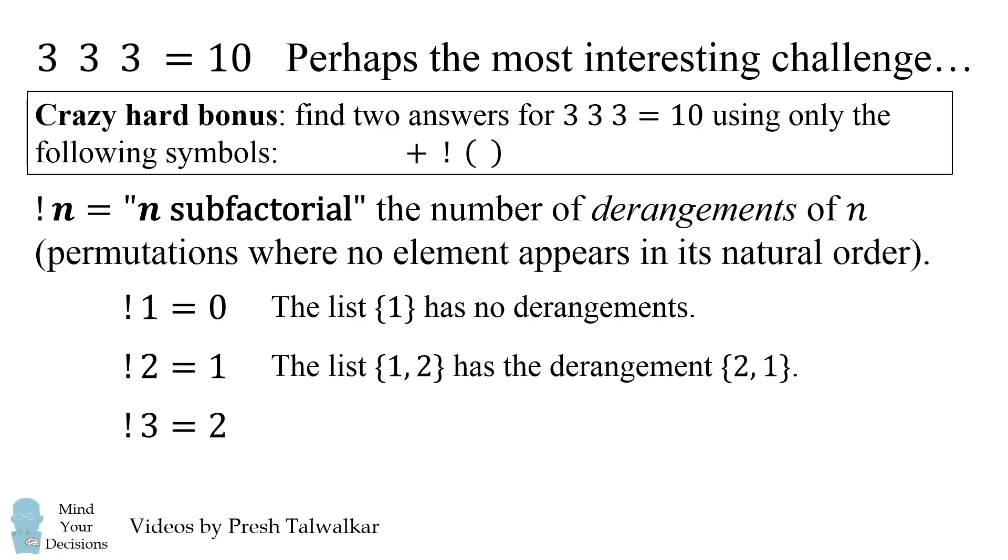Now for a list of 3 elements, 3 sub factorial is actually equal to 2. Why is that? Well, how can we put the list 1, 2, 3 so that no element is in its natural order? There are two different ways. We could have the list 2, 3, and 1. Or we could have 3, 1, and 2. Notice that in each of these the numbers 1, 2, and 3 are all out of order. So it will be very useful to us that 3 sub factorial is equal to 2.